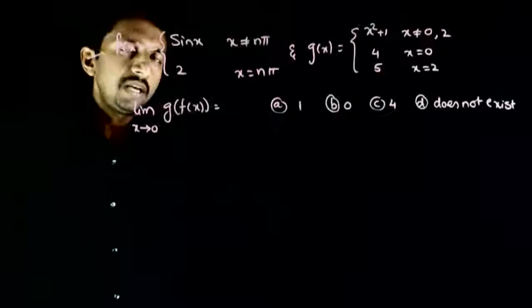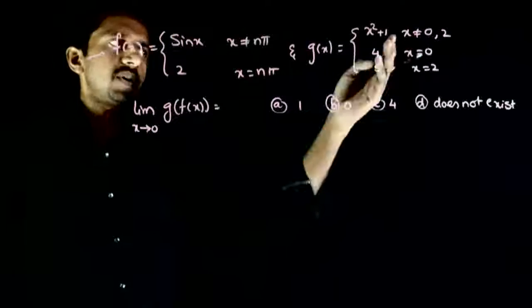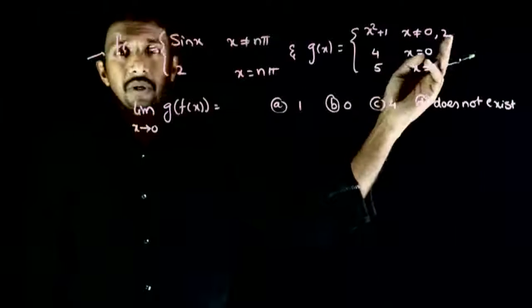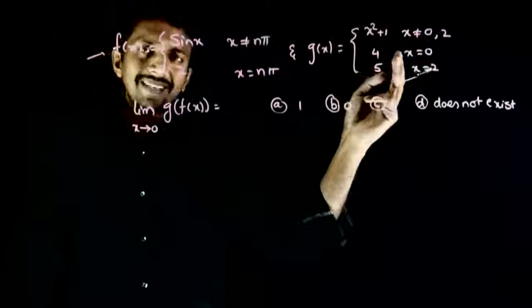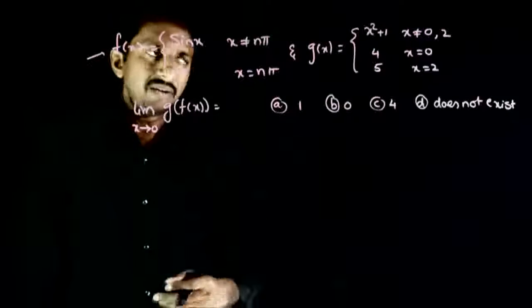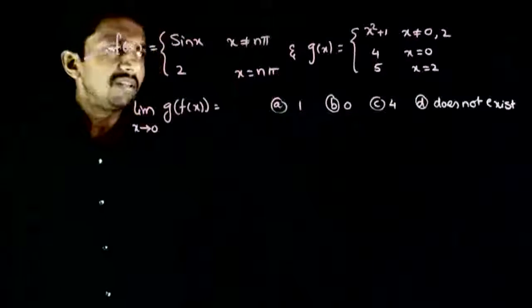if x is not equal to nπ, and 2 if x equals nπ. And g(x) equals x² + 1 if x is not equal to 0 or 2, g(0) equals 4, and g(2) equals 5.